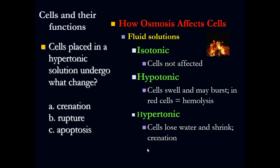Remember we have isotonic, hypertonic, and hypotonic substances that affect the cell through osmosis. If you have high concentration outside of the cell, the cell is going to lose water. If you have low concentration outside of the cell, water is going to enter into the cell.